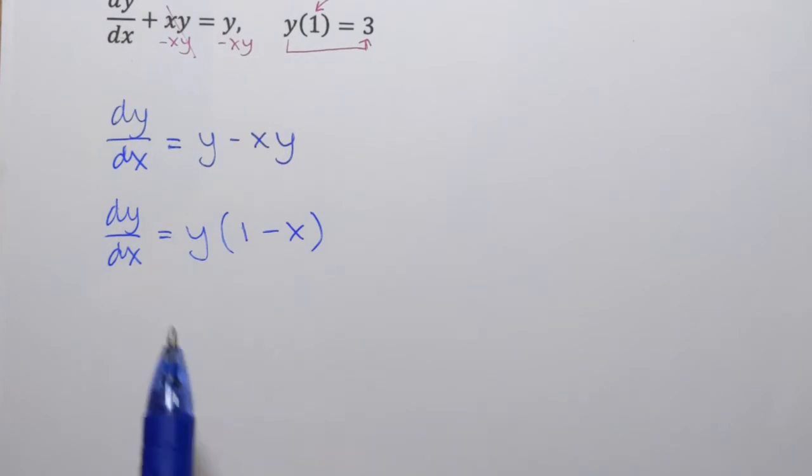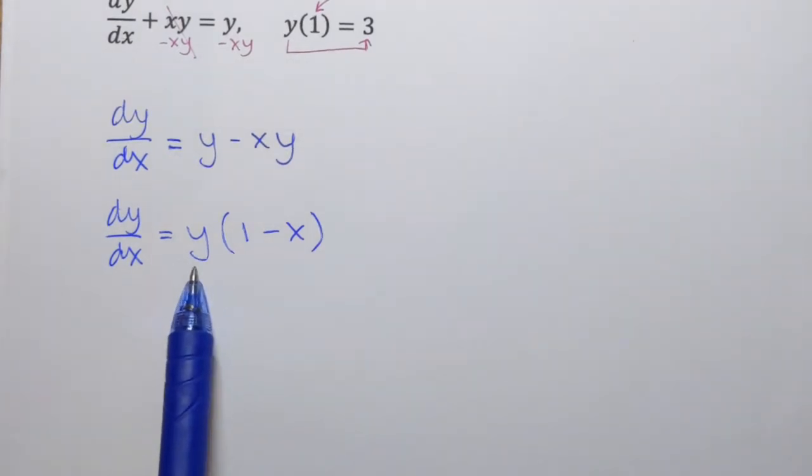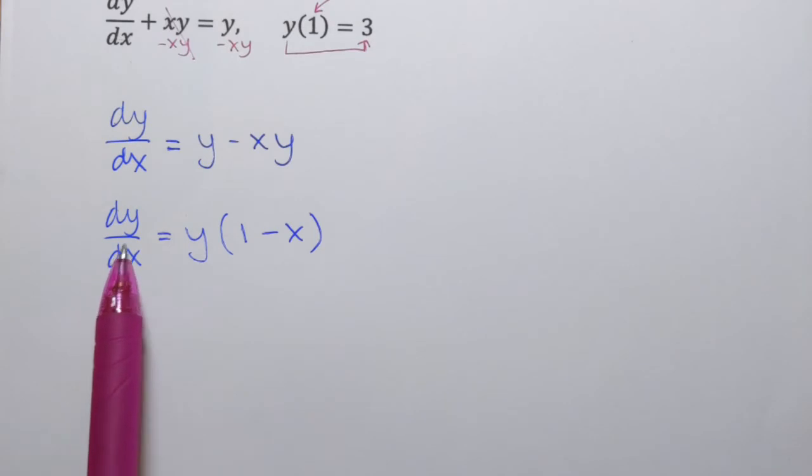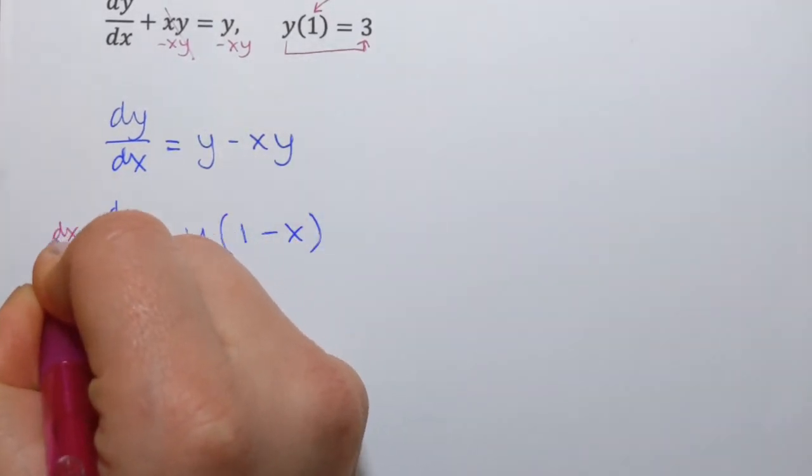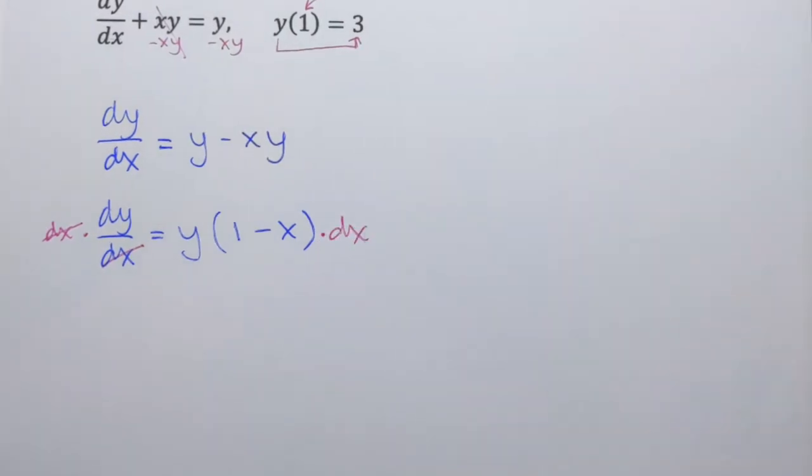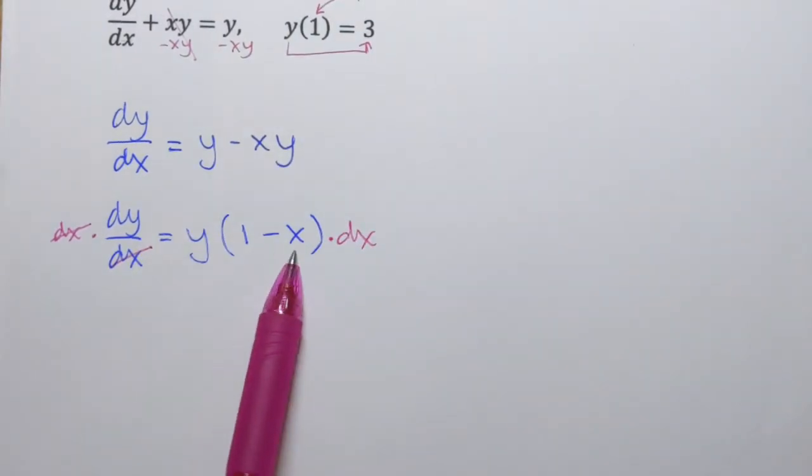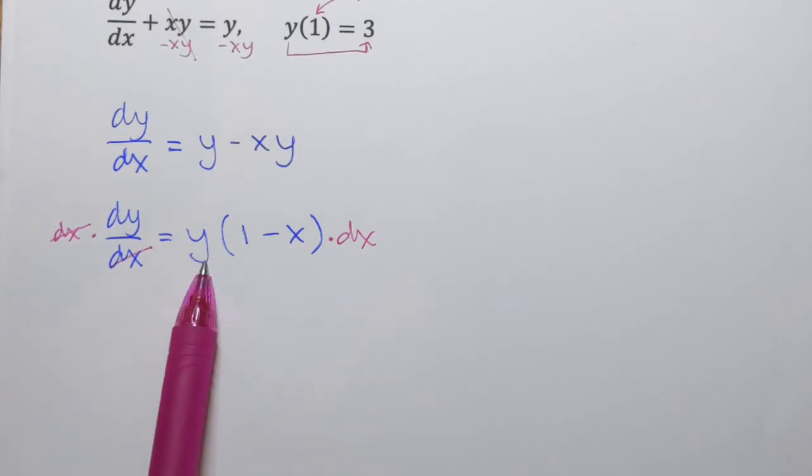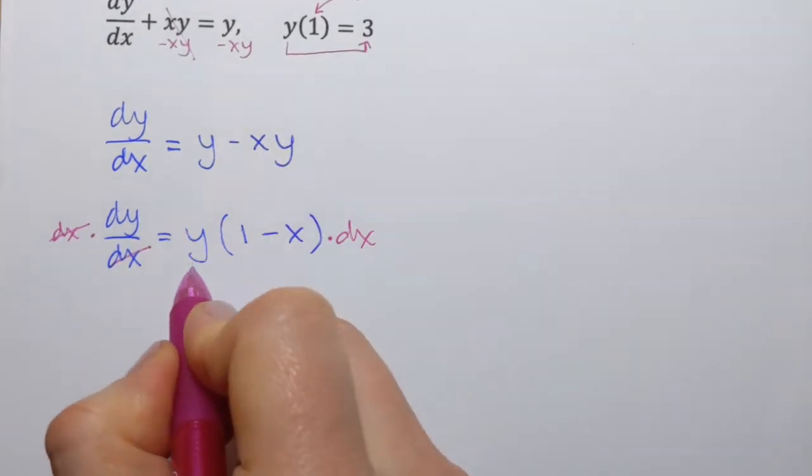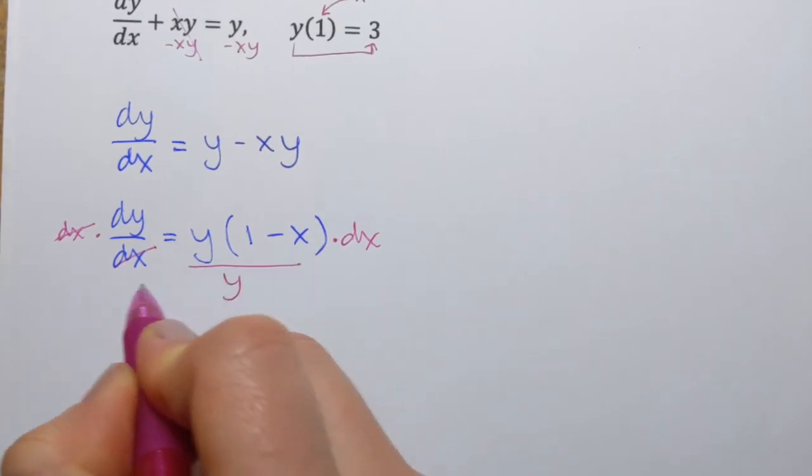And the reason I want to do that is because now it's gonna be easy to separate variables using division operation. Actually I'm gonna start by multiplying each side by dx so that dx appears on the right-hand side this way. And I already have 1 minus x here on the right-hand side. I'll just have to move y to the left. I'll do that by dividing each side by y.